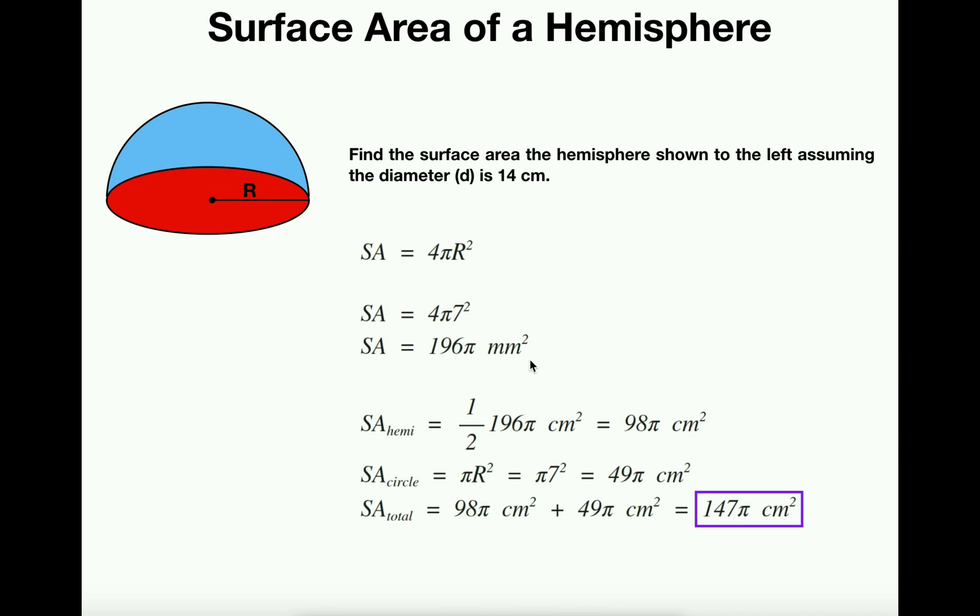That would be the surface area of the entire sphere. But since we're only talking about the top half of it, we have to multiply it by a half or divide by 2. And so the surface area of that top hemisphere part is half of 196π cm² or 98π cm². So that takes care of the hemisphere.